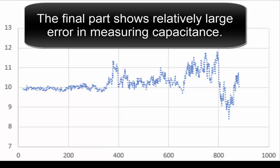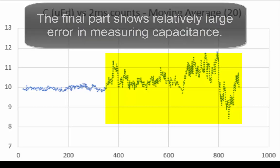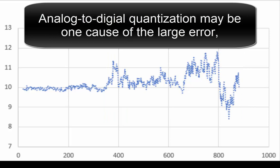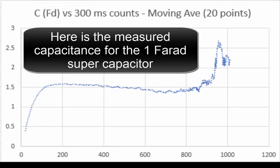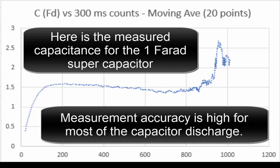The final part shows relatively large error in measuring capacitance. Analog to digital quantization may be one cause of the large error, which will be considered more later. Here is the measured capacitance for the 1 farad supercapacitor.